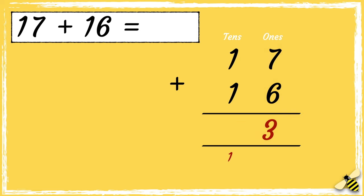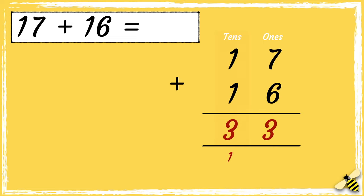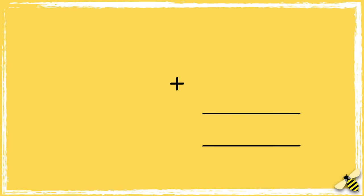So we're starting with the ones: 7 add 6 equals 13. We carry the 10 below in the tens column. So now we need to add the digits in the tens column, not forgetting about the 10 that we carried over. So 1 add 1 add 1 equals 3, so we have three tens and three ones.